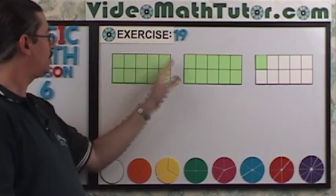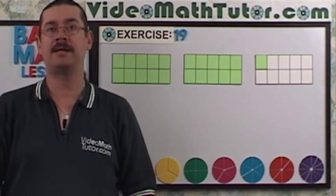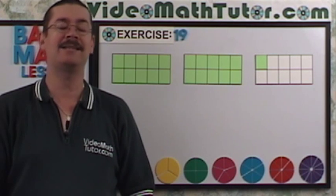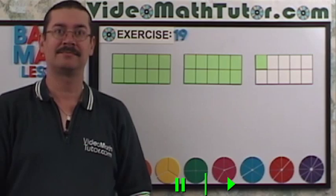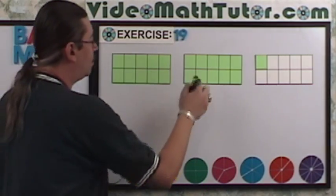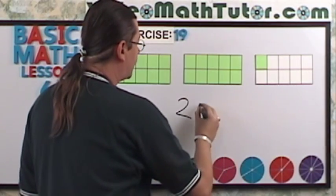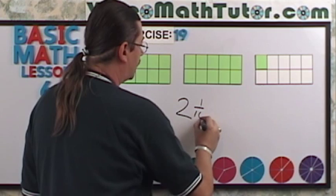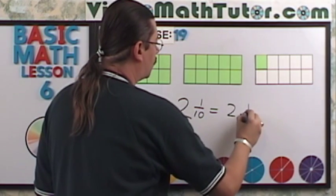If each large rectangle represents the whole part, I'd like you to now write a decimal fraction and its decimal form right now. Well, we have one, two whole parts and just one out of the ten over here is green. So we can now change that to 2.1.